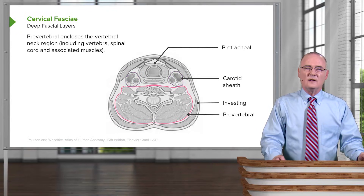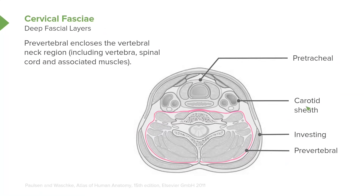As we continue looking at the deep fascial layers, the prevertebral layer, seen right in through here, is fairly extensive. It surrounds the vertebral compartment, which includes the vertebra in the region, the spinal cord within the vertebral canal, and then more externally, several vertebral-related muscles that are enclosed by the prevertebral deep fascial layer.